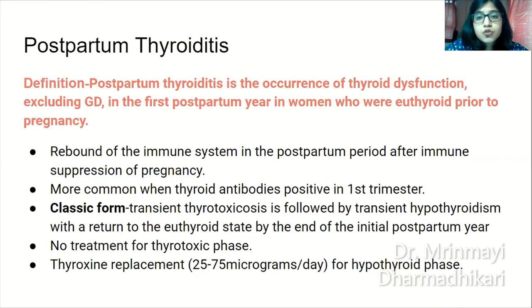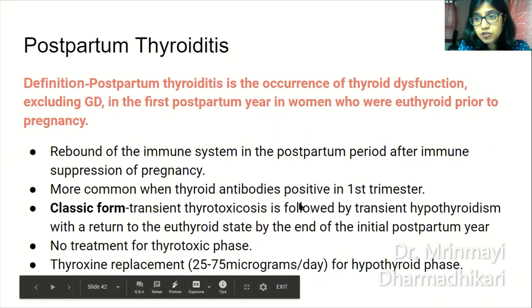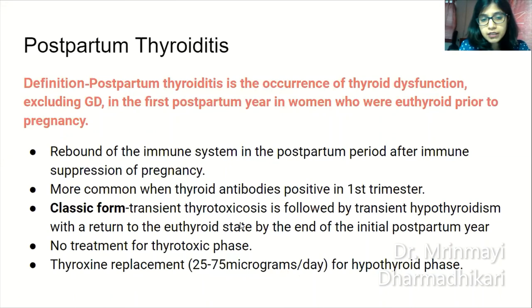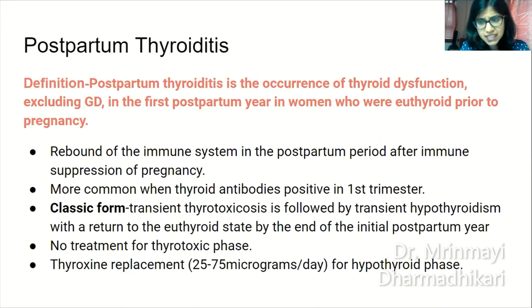Postpartum thyroiditis has a very specific definition: it is the occurrence of thyroid dysfunction excluding Graves disease in the first postpartum year, in women who were euthyroid prior to pregnancy. It is due to rebound of the immune system in the postpartum period after immune suppression in pregnancy, and is more common when thyroid antibodies are positive in the first trimester. In the classic form it presents as transient thyrotoxicosis between two and six months postpartum, followed by transient hypothyroidism around three to twelve months postpartum, with return to euthyroid state by the end of the first postpartum year. No treatment is required for the thyrotoxic phase; thyroxine replacement of 25 to 75 micrograms per day is advised for the hypothyroid phase as it can affect breastfeeding and lactation.